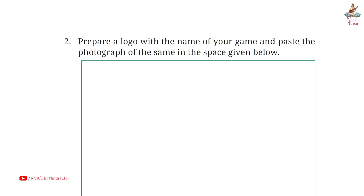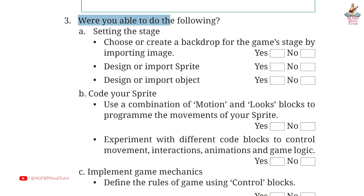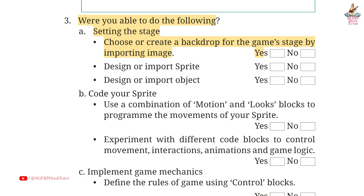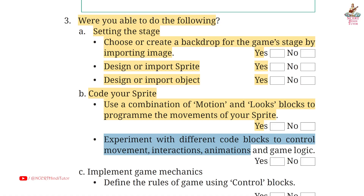Page 96. Question 2: Prepare a logo with the name of your game and paste the photograph in the space given below. Friends, you have to do this yourself. Third: Were you able to do the following? A. Setting the stage - choose or create a backdrop for the game stage by importing an image. Answer: Yes. Design or import sprite. Answer: Yes. Design or import object. Answer: Yes. B. Code your sprite - use a combination of motion and looks blocks to program the movements of your sprite. Answer: Yes. Experiment with different code blocks to control movements, interactions, animations, and game logic. Answer: Yes.